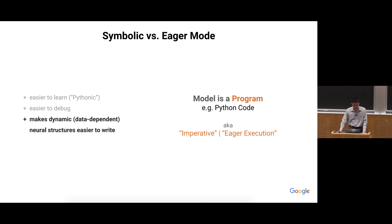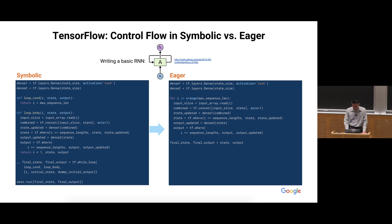Eager mode also makes it easier to write control flow and dynamic models. Suppose you want to write a recurrent neural network in the default symbolic mode — here is about the amount of code you need. You cannot use the native for loop or while loop in Python; you have to use TensorFlow's special while loop, which requires defining two functions — one for the termination condition and one for the body — and then feeding those into the while loop to get tensors back. And remember, those tensors are not actual values; you have to send them into session.run to get actual values. But with eager execution, things become much simpler — you can use the native Python for loop to loop over time steps in the input.